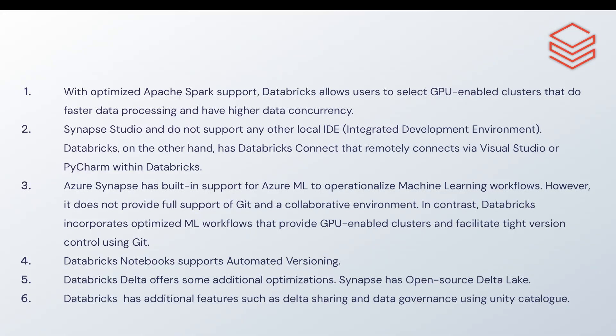The very first point of difference is that Synapse uses the open-source version of Apache Spark, whereas Databricks uses an optimized version of Apache Spark. In Databricks, you get very fast data processing because there are a lot of optimizations done on the Databricks clusters — each runtime has many optimizations layered on top of Apache Spark.